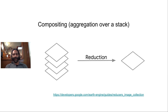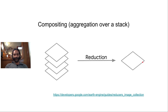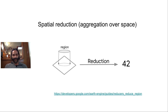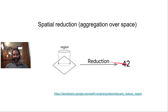Compositing is a very common workflow in Earth Engine. By compositing, I just mean aggregation over a stack of images, or a stack of bands — a time series if these are chronological images. We call that a reduction because you're reducing many images into one. Aggregation over space is something we call a spatial reduction, or a reduce region in Earth Engine language. You overlay a region onto an image and discover the mean of pixels in that region or standard deviation. That's a spatial reduction, and you just get your answer — in this case, 42.